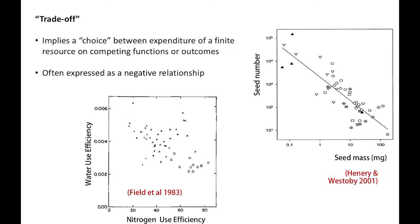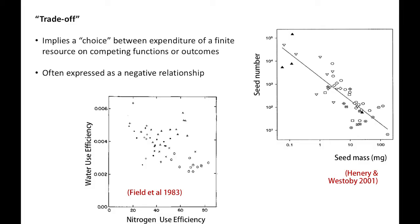A trade-off implies a choice — maybe on a physiological, ecological, or evolutionary timescale — between the expenditure of finite resources between competing functions or outcomes. It's very often expressed as a negative relationship. People often say, look, there's a negative relationship — it's a trade-off. But I think we need to be a bit more careful. For example, on the right here there's a relationship between seed mass and seed number for a bunch of species in eastern Australia. This is an enforced trade-off: for a given amount of reproductive effort, it can be packaged into many small seeds or very few large seeds.